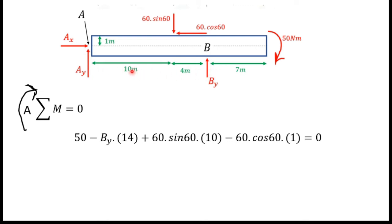Then I consider the 60 sine 60 force at a distance of 14 meters from A. The moment due to this force about A is clockwise, so I put a plus sign, and 10 is the distance between this force and point A as given. Then for 60 cos 60, the moment due to this force is counterclockwise, so I put a minus sign. The distance between this force and point A is 1 meter.